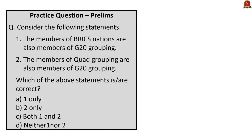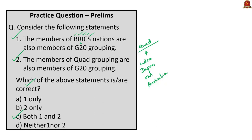The next question is about BRICS and Quad groupings. Statement 1 says members of BRICS — Brazil, Russia, India, China, South Africa — are also members of G20, which is correct. Statement 2 says members of the Quad — India, Japan, USA, Australia — are also members of G20, which is also correct. Since both statements are correct, the answer is option C: both 1 and 2.